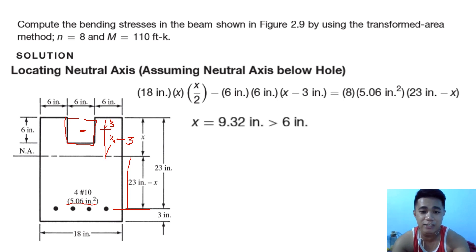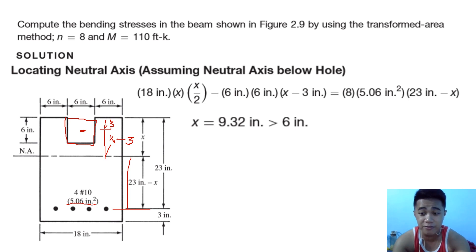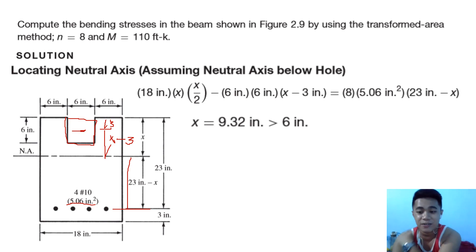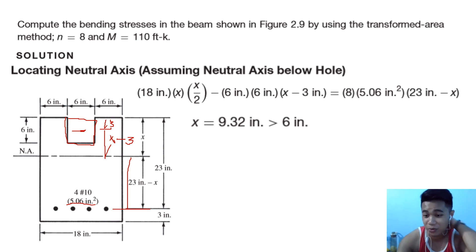Solving that equation, we get x = 9.32 inches. Since 9.32 is greater than 6, our assumption that the neutral axis is below the hole is correct. If x had been less than 6, our assumption would have been wrong and we would have had to solve again with the neutral axis located at a different position.